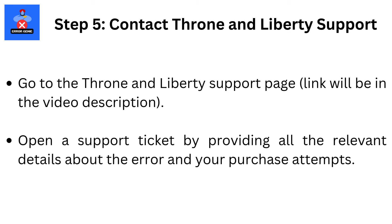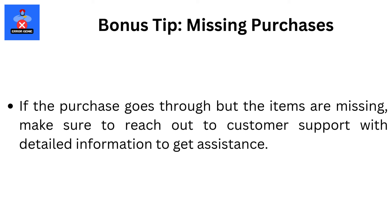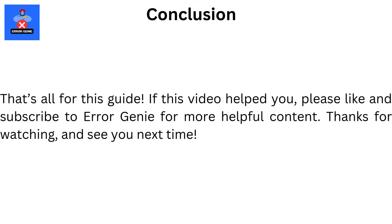Step 5: Contact Throne and Liberty Support. Go to the Throne and Liberty Support page — the link will be in the video description. Open a support ticket by providing all the relevant details about the error and your purchase attempts. If the purchase goes through but the items are missing, make sure to reach out to customer support with detailed information to get assistance. That's all for this guide.